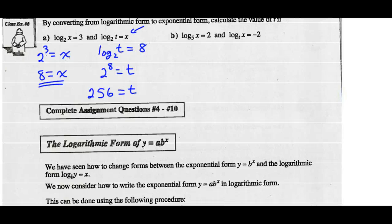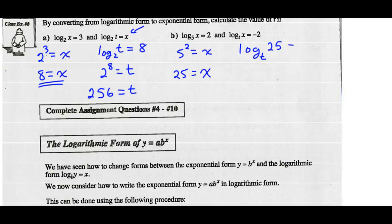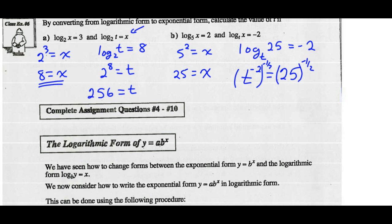Same thing for part b. Log of x base 5 equals 2 — base of 5 to the exponent 2 equals x, so x is 25. Now substituting x into the second equation: log of 25 base t equals negative 2. Write this in exponential form: t to the negative 2 equals 25. To isolate t, I raise both sides to the power of negative one-half. So t to the first equals 25 to the negative one-half, which is 1 over the square root of 25. So t equals one-fifth.